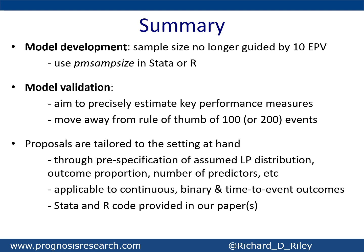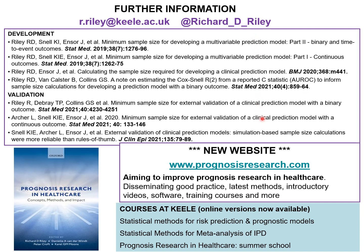In summary, the sample size proposals aim to do something more tailored and scientific than using rules of thumb. For model development, we suggest using pmsampsize in Stata or R. For model validation, we suggest estimating key performance measures precisely. The proposals are tailored to the setting by pre-specifying things like the distribution of the linear predictor, the outcome proportion, and the number of predictors. They're applicable to continuous, binary, and time-to-event outcomes, with Stata and R code provided in our papers. We'd also like to reference a new website, prognosis-research.com, which houses good practice for prognosis research and details of online courses. Thanks very much for listening.